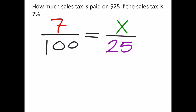So to do this one, we can use some cross-multiplication. I got 25 times 7 equals 100 times x.